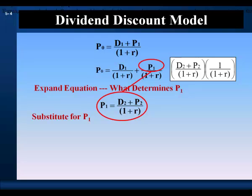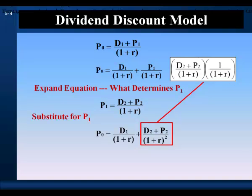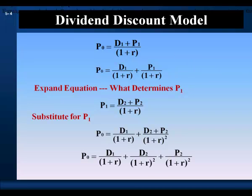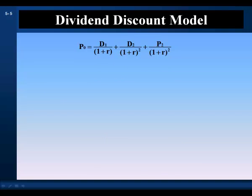Let's substitute this definition of P1 for the year 1 terminal price in our model. The price at year 1 is discounted back 1 year to the present, and we get this expression. Let's rearrange the equation to separate the present value of the dividend and the present value of the terminal price. We've expanded the model by 1 year; let's expand the model another year by asking what determines P2, the price at the end of year 2.